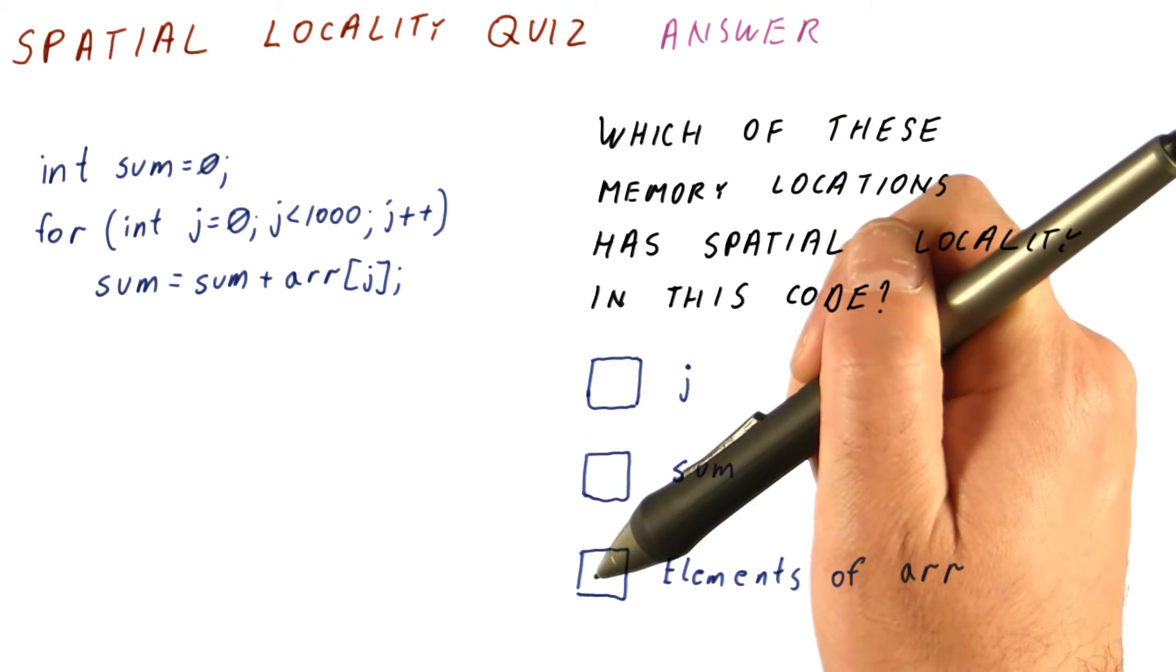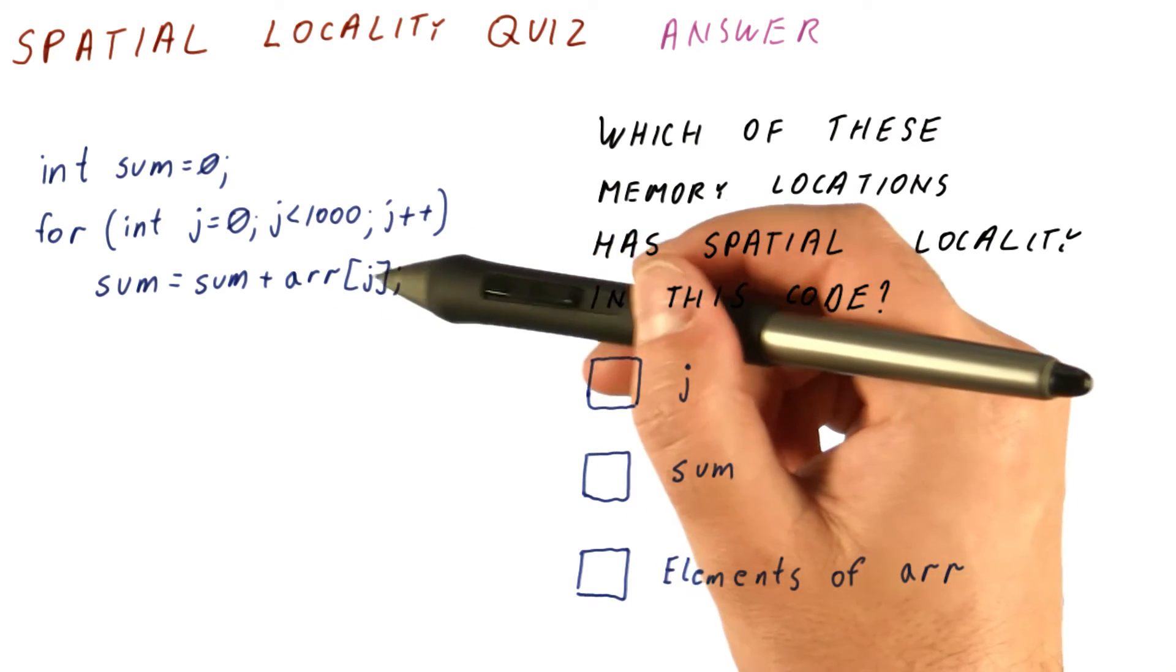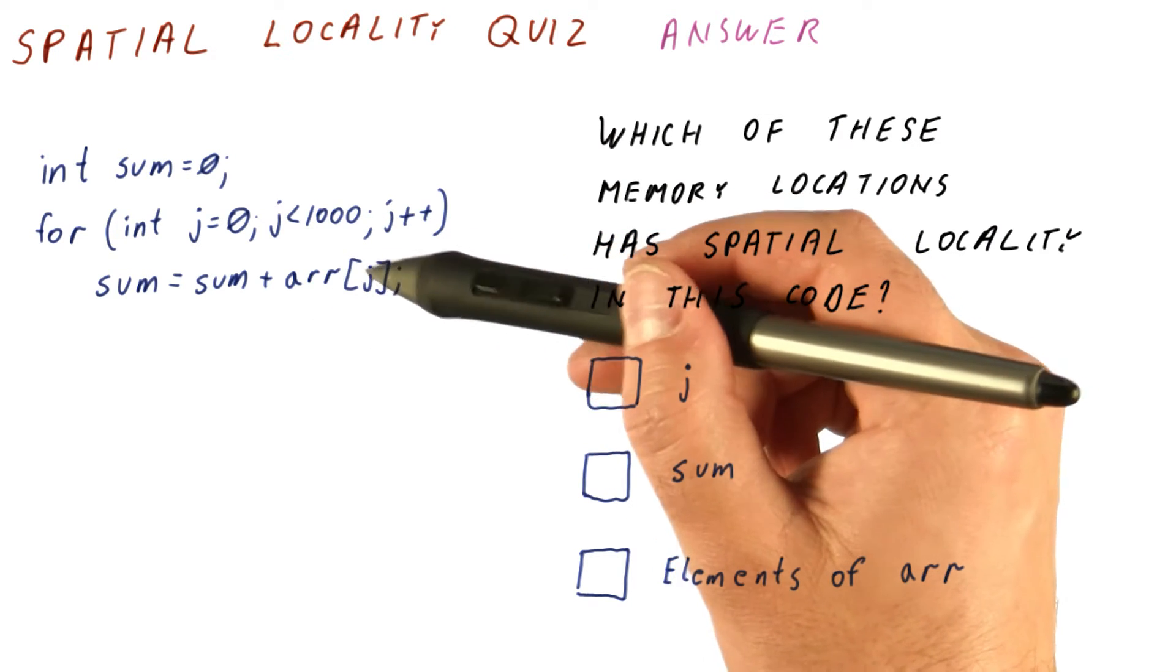However, there is a lot of spatial locality. Once we access arr[0], in the next iteration we will be accessing arr[1], then arr[2], and so on.